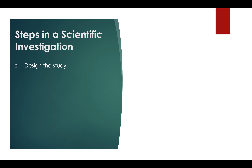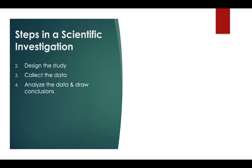Continuing with the steps in a scientific investigation: the second step is to design the study. Once we've figured out our research question or hypothesis and defined our variables, we determine how exactly we are going to carry out the study. The third step is to collect the data — design your study and then implement it. Once we've collected data, whether from a true experiment or a survey, analyze it and draw conclusions based on what the data is telling you.